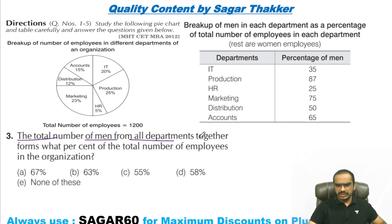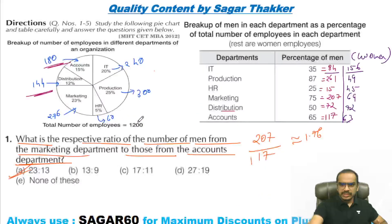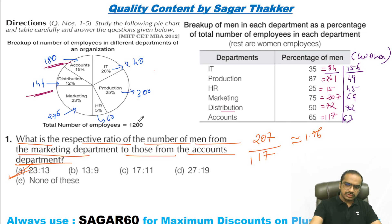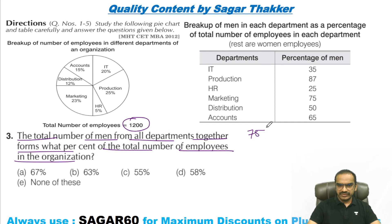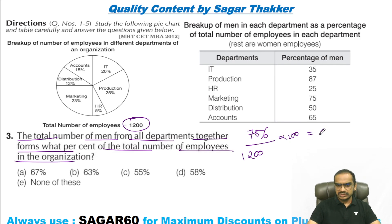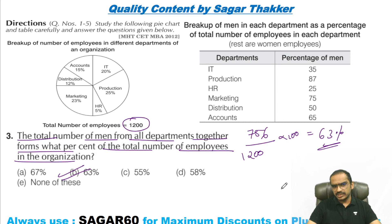The total number of men from all departments together forms what percent of total number of employees in the organization? Total number of employees is 1200. Counting total men — total number of men as a percent of total employees comes to 63 percent.